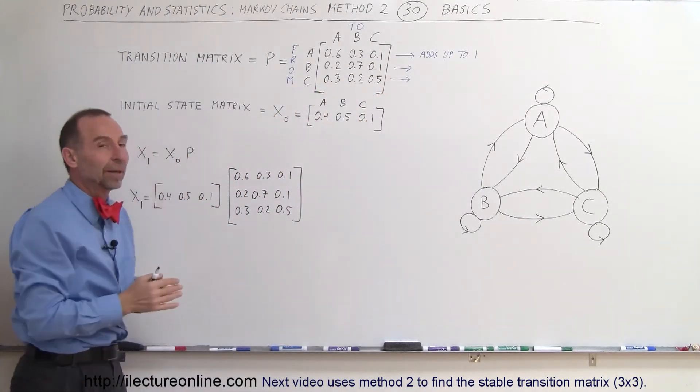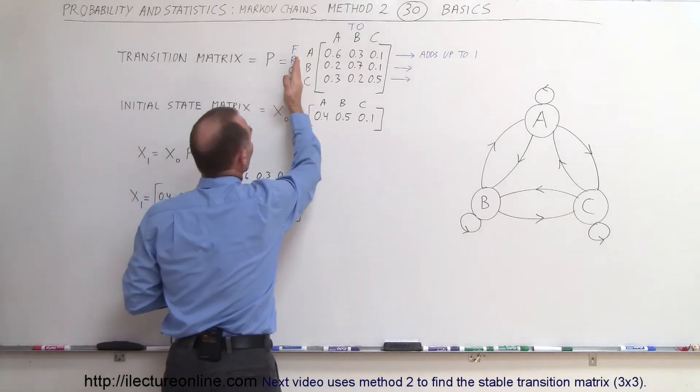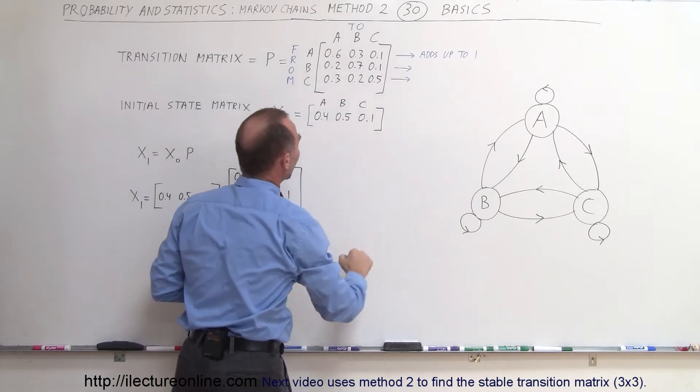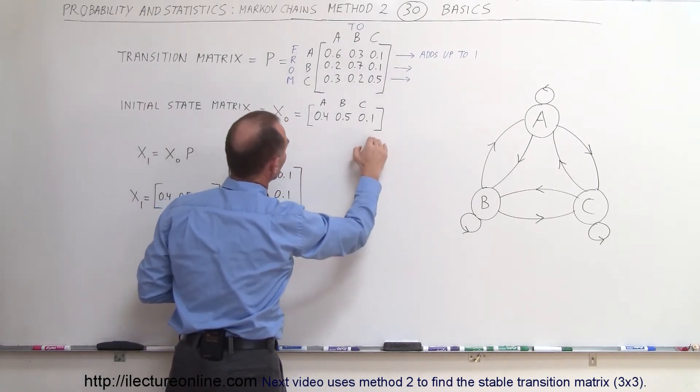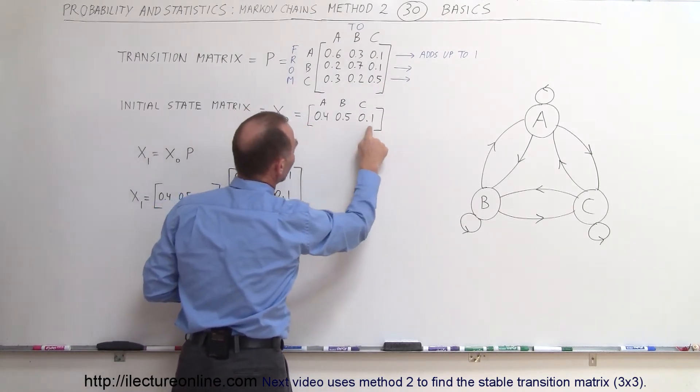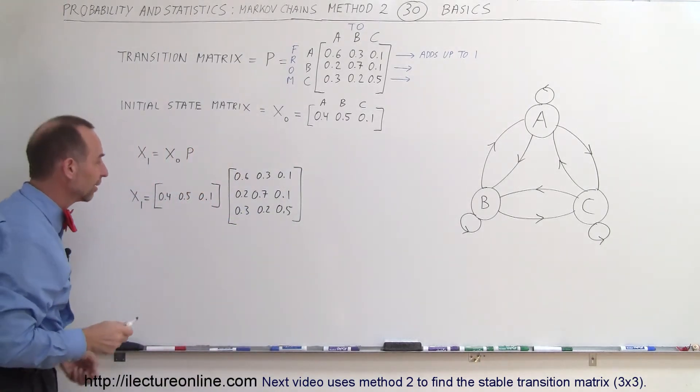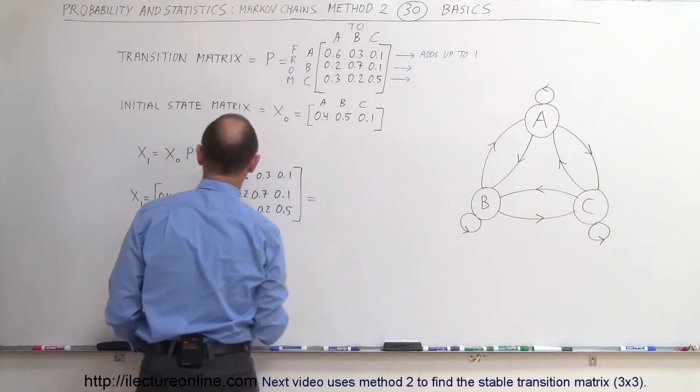So in the case we use this particular method we have the from states on the left and the to states on top the numbers add up to 1 horizontally as well as the state here the state matrix notice that the numbers add up to 1 horizontally instead of vertically in the other method. Okay now when we multiply this we get the following.